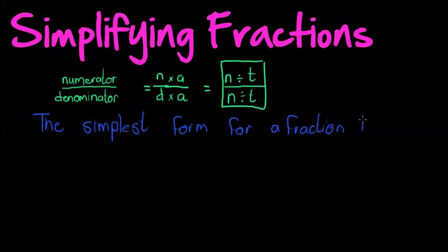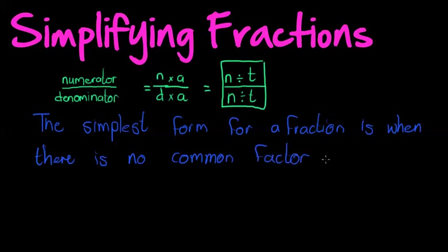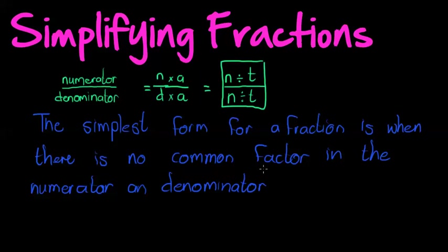Okay, is when there is no common factor. When there is no common factor in the numerator and denominator. Okay, why not? Okay, because if they had a common factor, remember a factor is something that can divide into the number without a remainder.